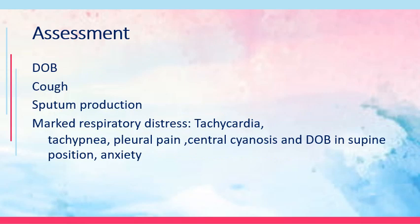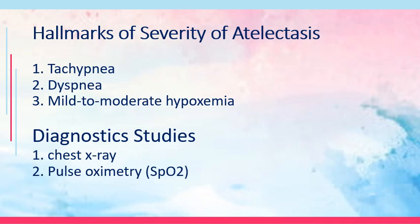Assessment for atelectasis would include dyspnea, cough, sputum production, marked respiratory distress, tachycardia, tachypnea, pleuritic pain, central cyanosis, orthopnea, and anxiety. Hallmarks of severe atelectasis are tachypnea, dyspnea, and mild to moderate hypoxemia. Diagnostic studies include chest x-ray to visualize lung collapse and pulse oximetry. For prevention and management in post-surgical patients, encourage frequent position changes, early ambulation for lung expansion, deep breathing and coughing exercises, and use of incentive spirometry. Administer opioids and sedatives judiciously as they can cause respiratory depression.